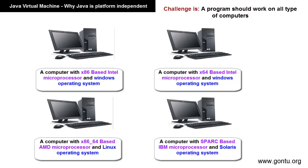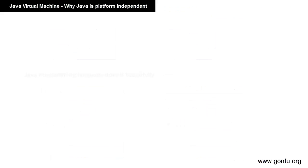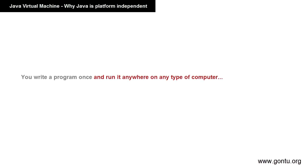In this world, different people use different types of computers — meaning computers with different types of microprocessors and different types of operating systems. So when you write a program in any language, the challenge is it should work on all these different computers with different combinations of microprocessors and operating systems. Today if I write a game program, I'd like everyone in the world using any computer to enjoy running my game. Java does it beautifully — it says write a program once and run it anywhere. That is, Java is a platform-independent language, meaning a program written in Java can run on any type of computer which Java supports.